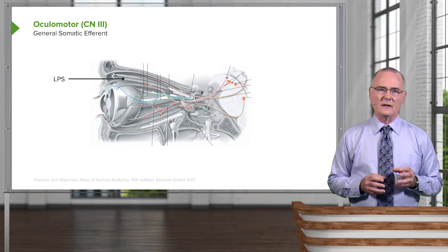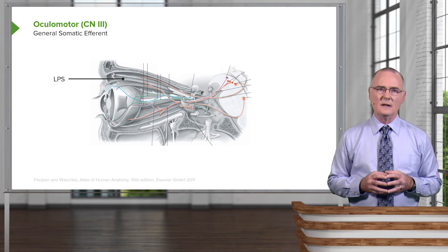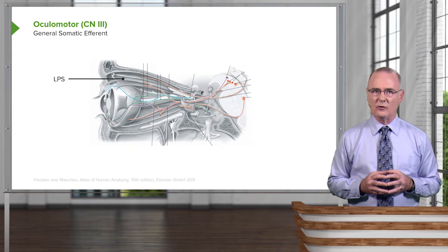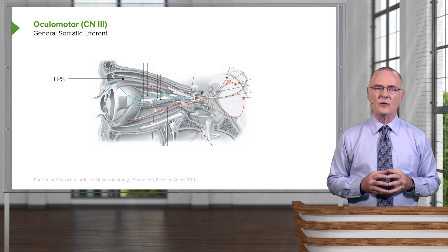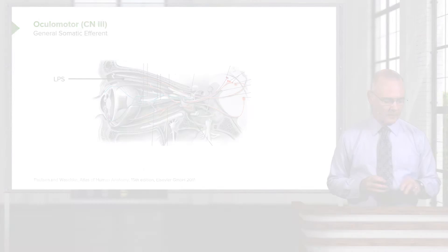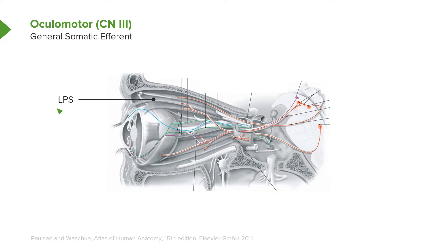With respect to general somatic efferent innervation, the ocular motor nerve is responsible for innervating several of the extraocular muscles as well as a muscle that elevates the upper eyelid. That muscle is termed the levator palpebrae superioris. You can see it along here, with its insertion into the upper eyelid right in through here.